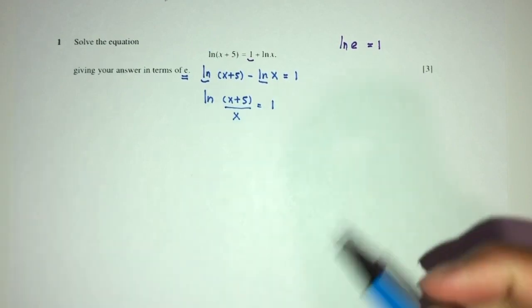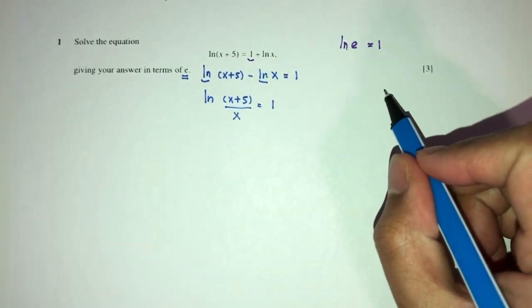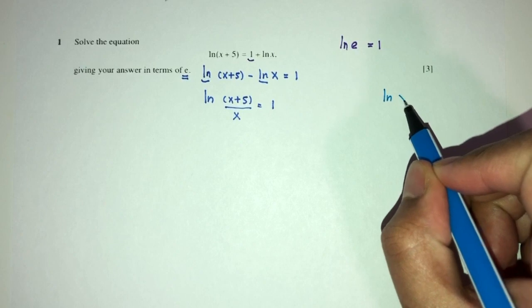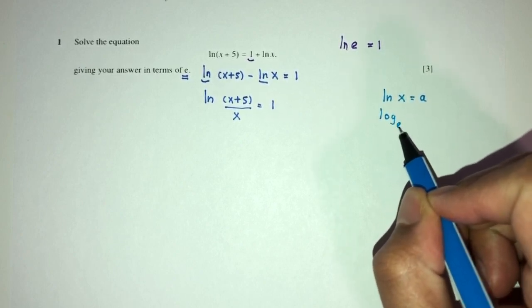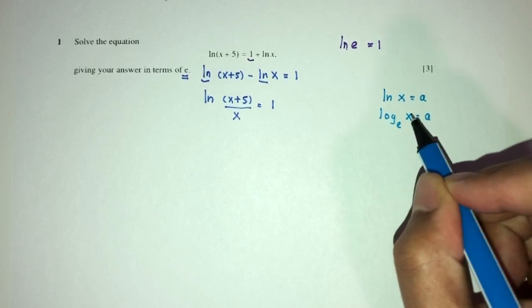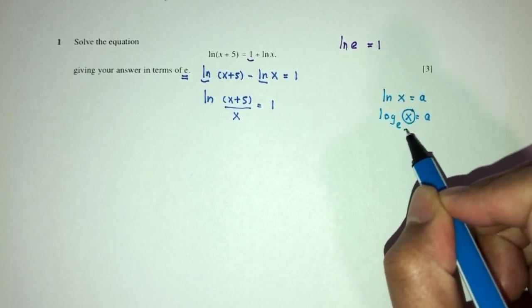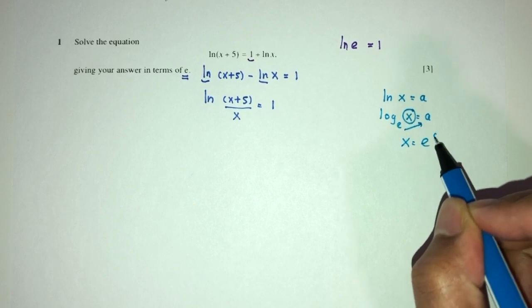Now here we should know something. When you have ln(x) equal to a, now ln is log to the base of e, x equal to a. To find the value of x, I have to send the base over here. x will be exponential a.